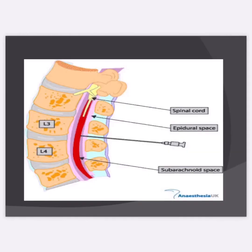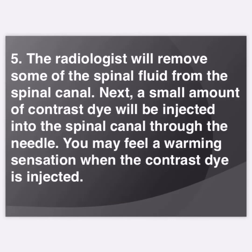Anatomy parts shown include: spinal cord, epidural space, subarachnoid space, and anaesthesia. Step 5: The radiologist will remove some of the spinal fluid from the spinal canal. Next, a small amount of contrast dye will be injected into the spinal canal through the needle. You may feel a warming sensation when the contrast dye is injected.